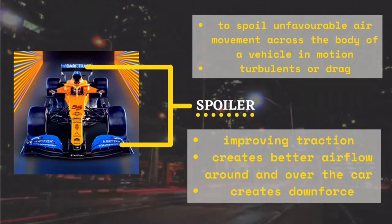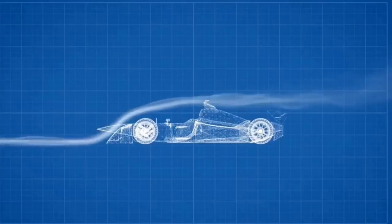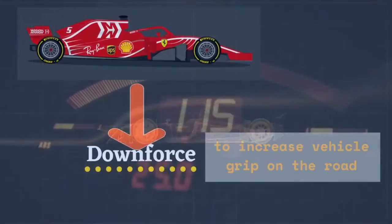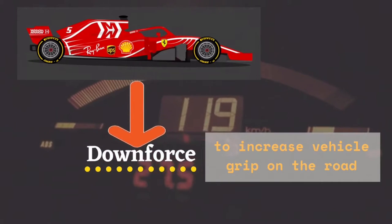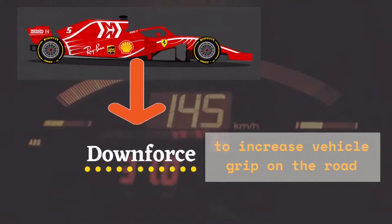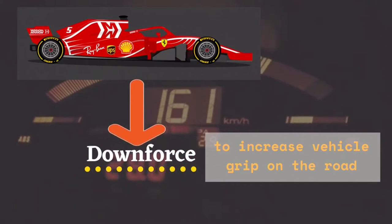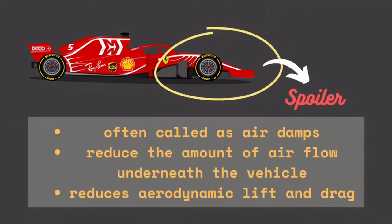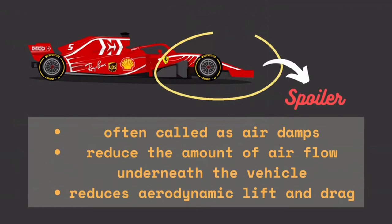The largest impact a spoiler has on a vehicle is improving traction. The spoiler creates better airflow around and over the car and creates a downforce, increasing the vehicle's grip on the road. With the added traction, it becomes easier to control the vehicle without needing to add any extra weight. Spoilers on the front of a Formula One car are often called air dams because, in addition to directing the airflow, they also reduce the amount of air flowing underneath the vehicle, which generally reduces aerodynamic lift and drag.